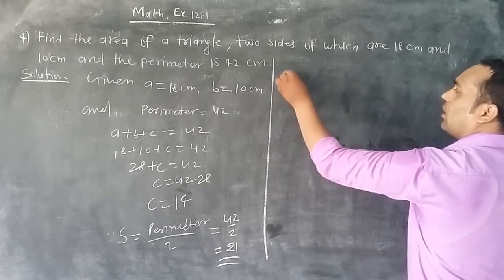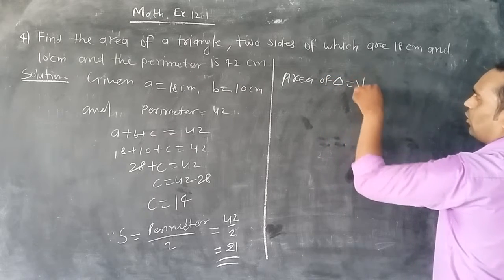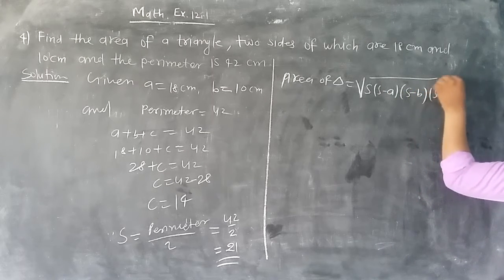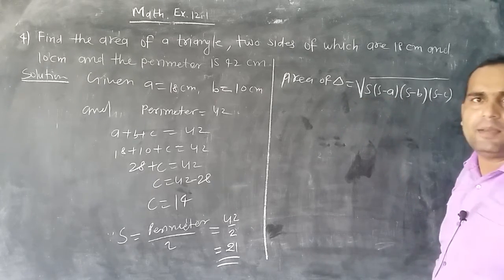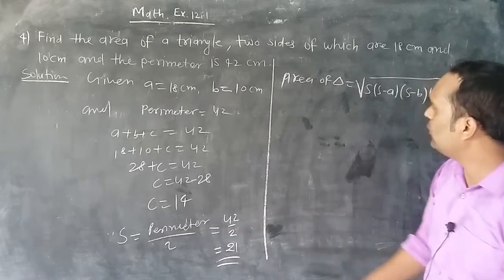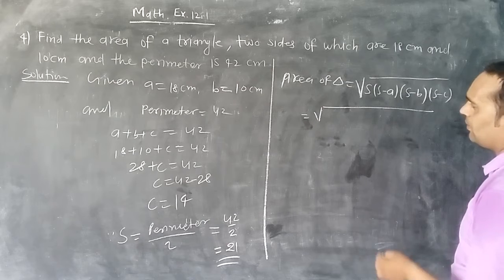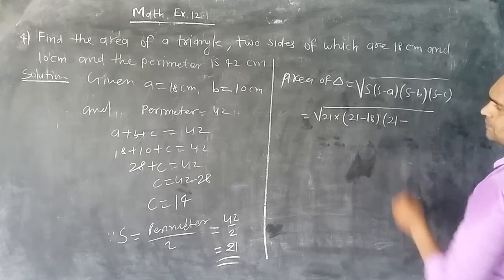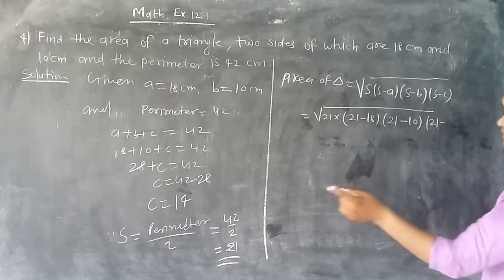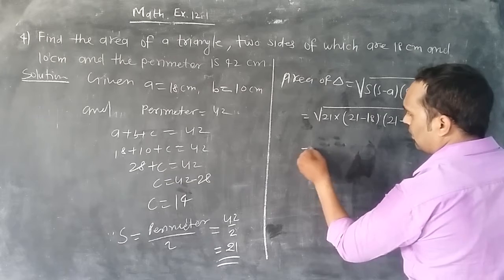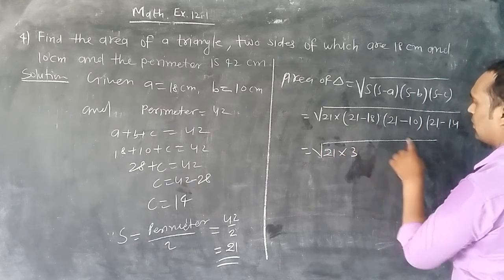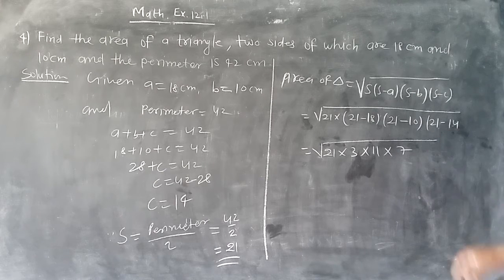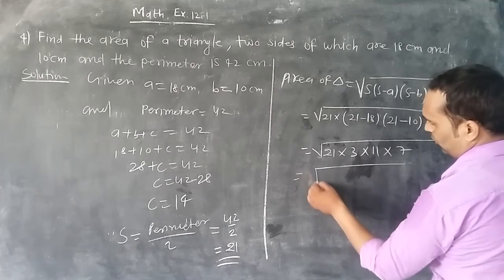Area of triangle equals √[s(s-a)(s-b)(s-c)]. Substituting: √[21(21-18)(21-10)(21-14)] equals √(21×3×11×7).